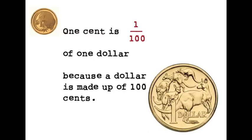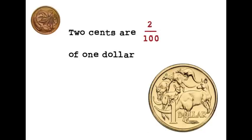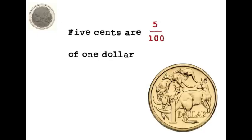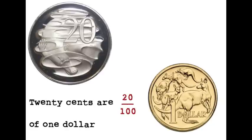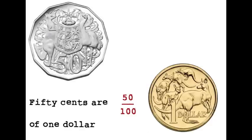One cent is one one-hundredth of one dollar, because a dollar is made up of 100 cents. Two cents are two one-hundredths. Five cents are five one-hundredths. We are still looking at one part of a dollar. Ten cents are ten one-hundredths of one dollar. Twenty cents are twenty one-hundredths of one dollar. Fifty cents are fifty one-hundredths of one dollar.